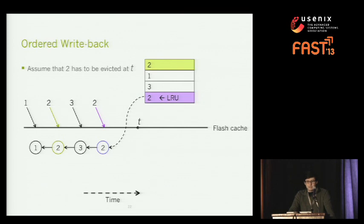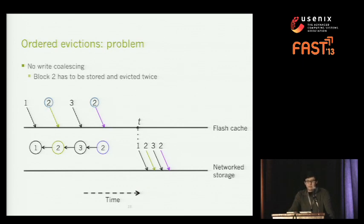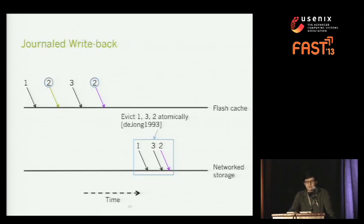Let's see what happens with ordered write-back in an example. Suppose we're running an application and need to evict something; LRU tells us the least important block is block two. We look at the graph and see block two depends on a whole bunch of other evictions, so we perform all those first and finally evict block two. This reveals a big problem: block two has to be evicted twice and stored twice, meaning no write coalescing in ordered write-back. This can be solved by evicting all these blocks atomically using a write-group interface, similar to the logical disk work — everything before the transaction is consistent, everything after is consistent, and if we crash in the middle we just discard the uncommitted transaction.